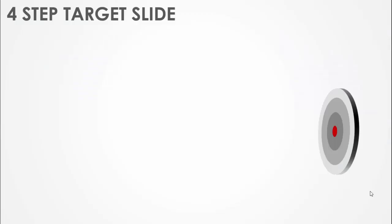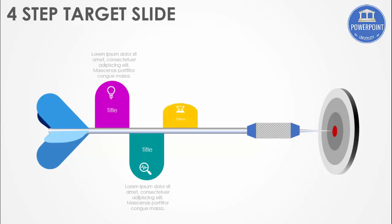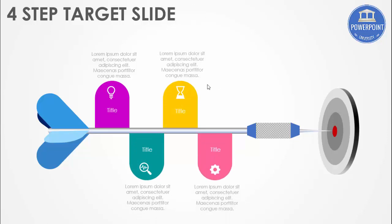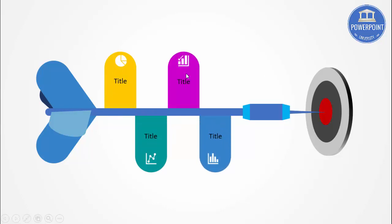There are endless possibilities in PowerPoint — we just need some creativity. In this tutorial I'm going to show you how to create a four-step target slide, or a setting-goal slide. I've put a target here, and when you click, a dot comes and hits the target, then it shows the first, second, third, and fourth titles. The dart has a 3D look, and I've also made a flat-look version.